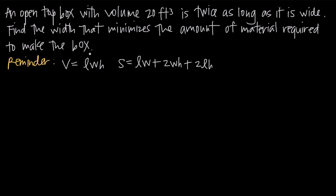As with any applied optimization problem, the first thing we want to do is look for the question: what have we been asked to maximize or minimize? If we look at the question here, we're asked to find the width that minimizes the amount of material. So what do we mean by amount of material? It's the material required to make the bottom, the sides, the front, and the back.